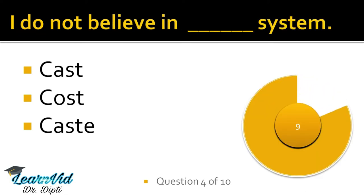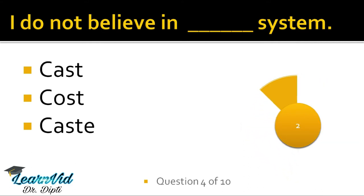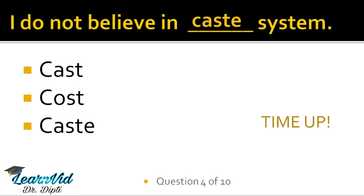I do not believe in dash system. The correct answer is C-A-S-T-E, caste system. Now the first option, C-A-S-T, means to cast — like vote cast karna, vote daalna — or the cast of a serial or movie. Second is C-O-S-T, which means price or value — what is the cost of this book. And the third is C-A-S-T-E, which means jati — social class. I do not believe in the caste system.